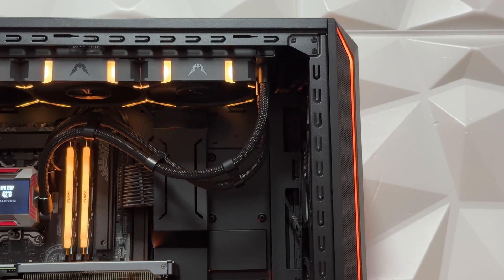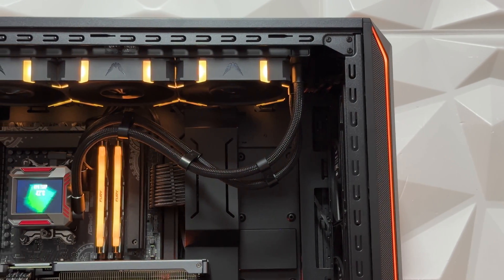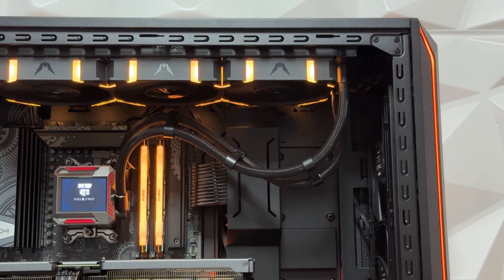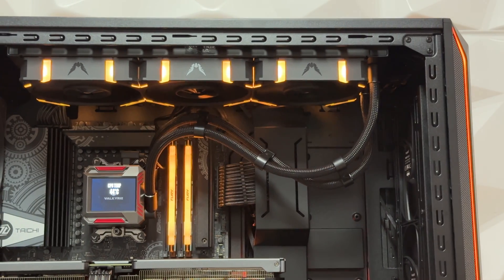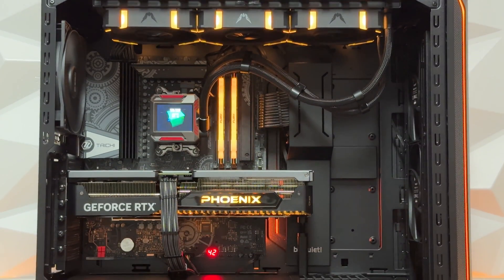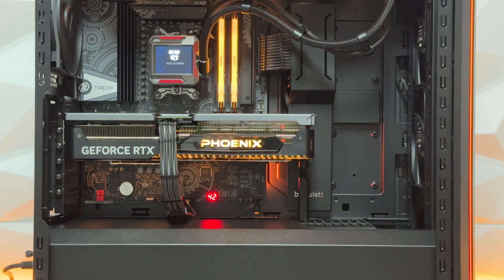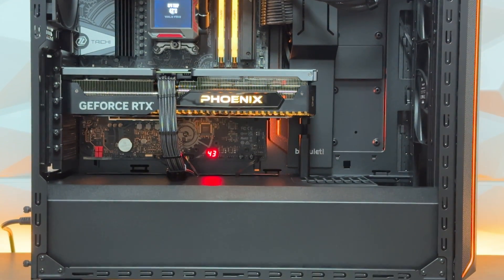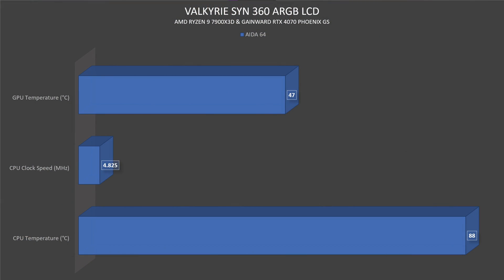For the benchmarks, the components used are: Be Quiet Shadow Base 800DX — an outstanding airflow case with no restrictions on performance — AMD Ryzen 9 7900 X3D, and the Asus ROG B650E Tai Chi Lite. The GPU is the Gainward RTX 4070 Phoenix GS. In Aida 64 Extreme Edition, the CPU went up to 88 degrees Celsius while clock speeds reached 4825 MHz. GPU thermals went up to 47 degrees.